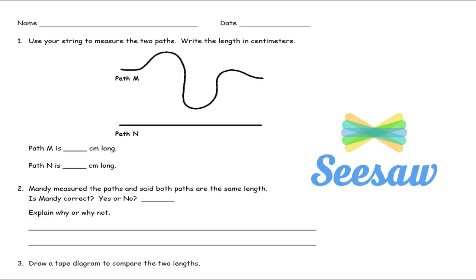All right so now it's your turn. You need to get your string and you need to get your ruler and you need to get this piece of paper out for your exit ticket. And you're going to answer these questions.